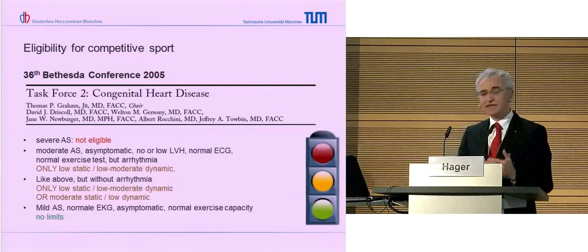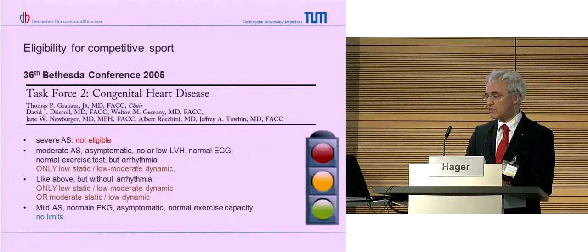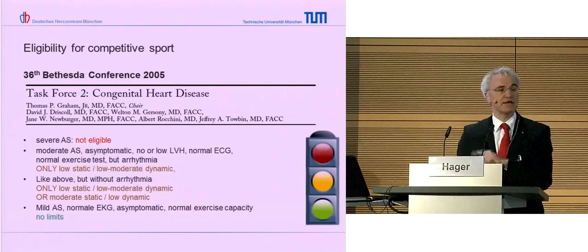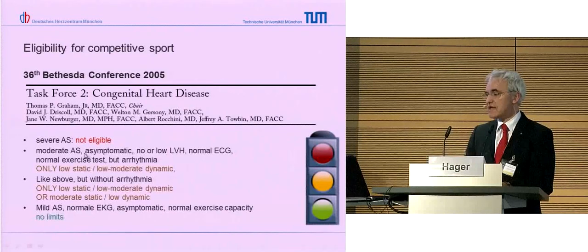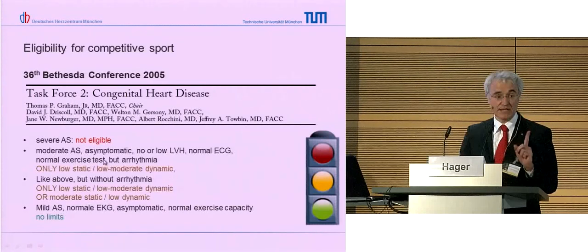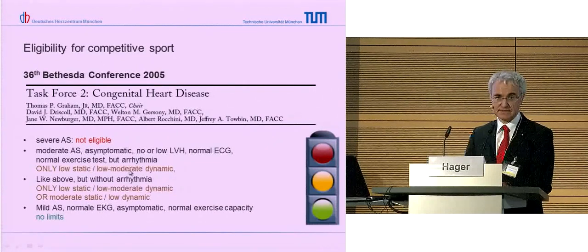They stick to this information and have a little space that nothing happens. All the severe aortic stenosis patients are not eligible for competitive sport - we are talking about competitive sport, not leisure sport in this Bethesda conference. For those with moderate aortic stenosis that are asymptomatic, have no or low left ventricular hypertrophy, a normal ECG, a normal exercise test, but they might have arrhythmia - they should only perform low static and low or moderate dynamic exercise for competitive sport.